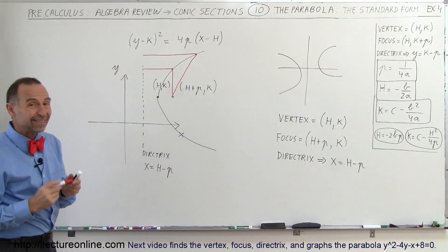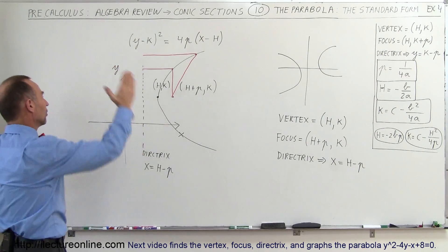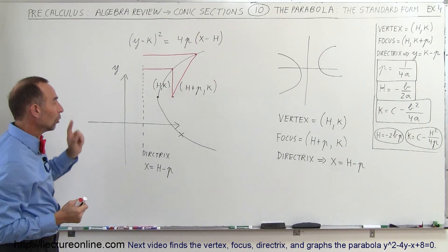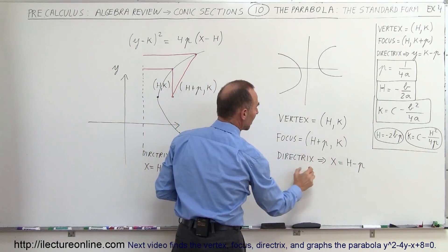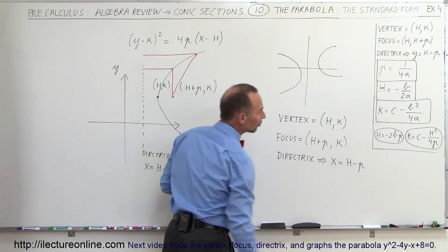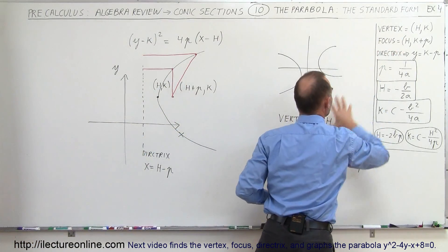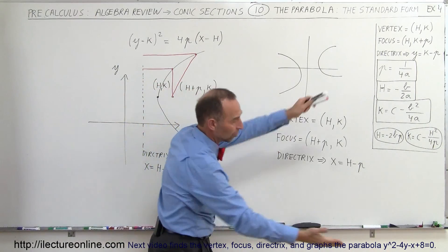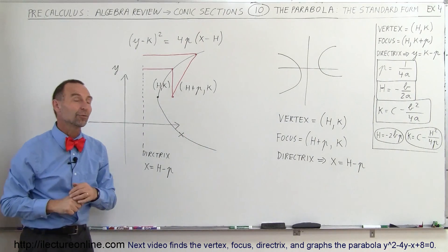It's the same form, same shape, but sideways — to the right or to the left, depending on the signs. The focus is found by taking h plus p instead of k plus p, and the directrix is x equals h minus p instead of y equals k minus p. That's the only difference. This form is for a parabola that opens to the right or to the left, whereas the other form is for a parabola that opens upward or downward.